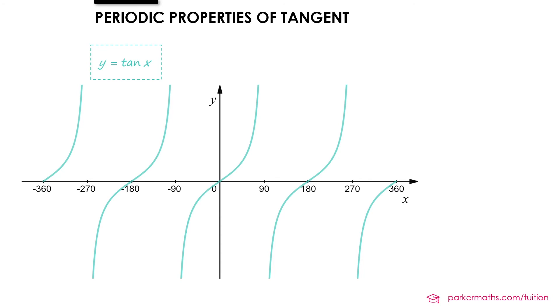This one is different to the sine and cosine graphs because the tan graph repeats every 180 degrees. And so you might be able to guess what the periodic property for this one looks like. Tan theta equals tan theta plus or minus 180 degrees.